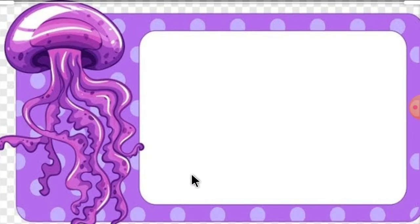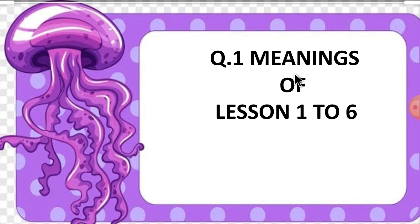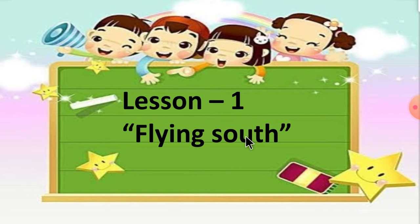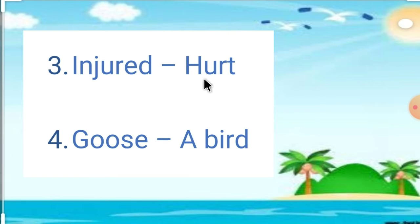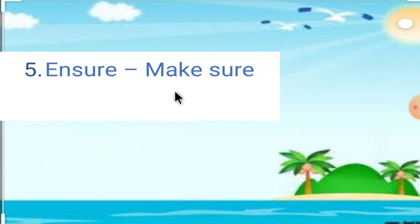Now let's begin revision according to paper style. Question 1 is Meanings, from Lesson 1 to 6. Lesson 1: Flying South. Meanings — Separated means 'be apart'; Reunite means 'together'; Injured means 'hurt'; Goose means 'a bird'; Ensured means 'make sure'.